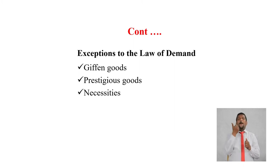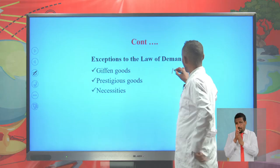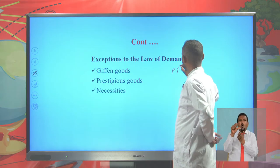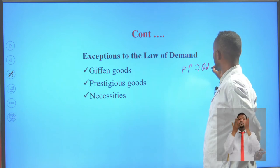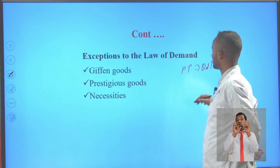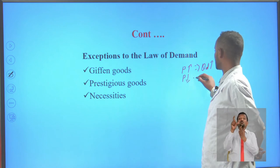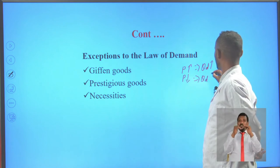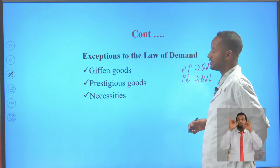There are exceptions to the law of demand — these are violations or cases against the law. That means as price of a commodity increases, the quantity demanded may not decline or may actually increase. And as price of a commodity decreases, quantity demanded may decline or remain unchanged.